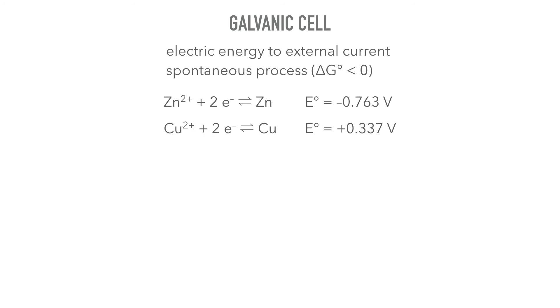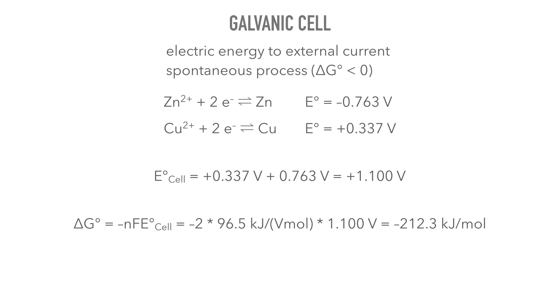The oxidation potential of zinc is the reduction potential of zinc 2-plus with opposite sign. Therefore, we get a potential of the cell of plus 1.1 volts. A positive cell potential leads to a negative delta G. This means the process happens without external influence spontaneously.